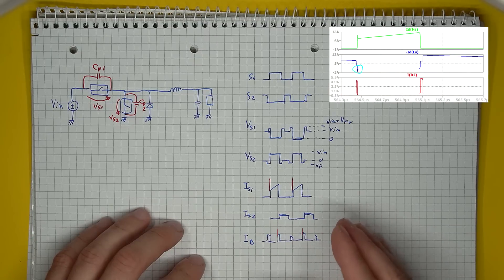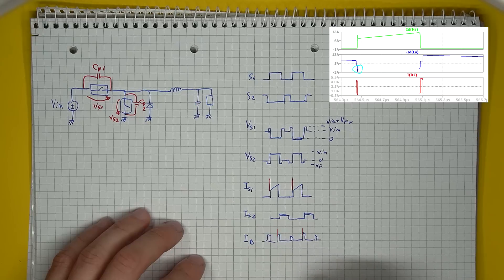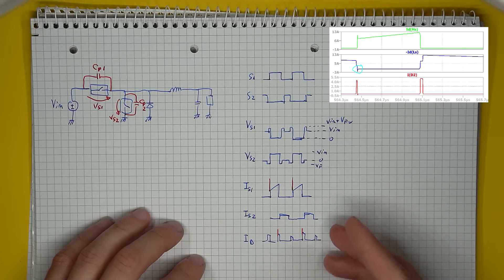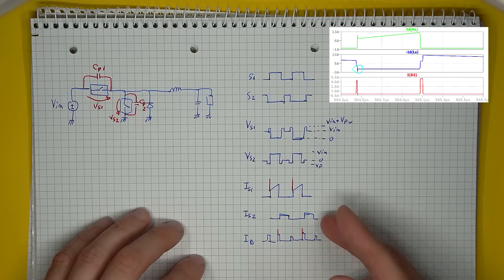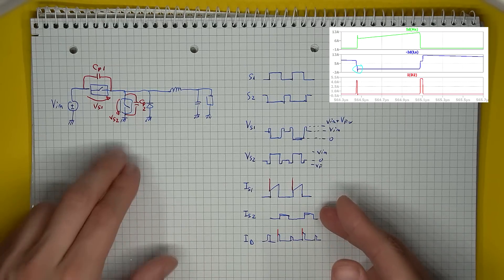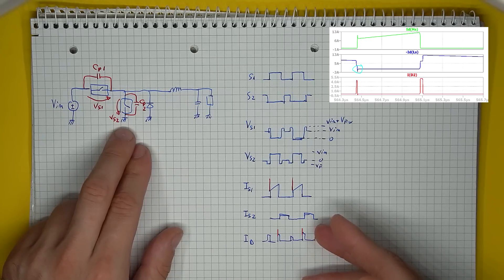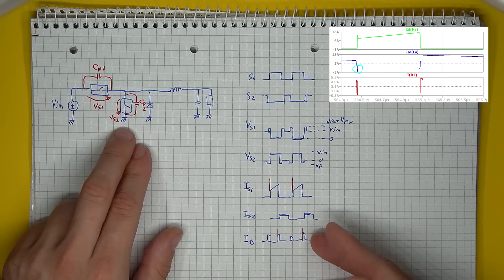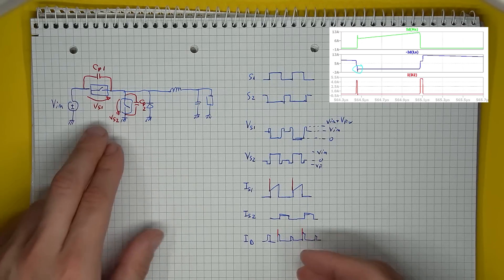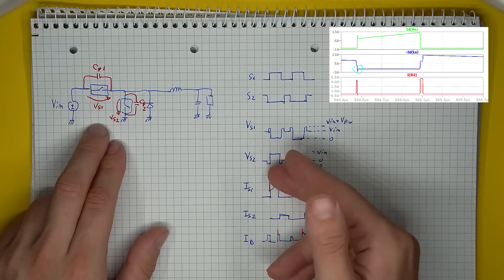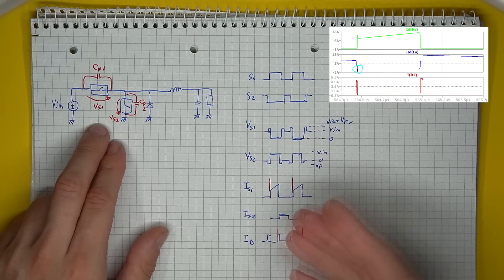Now the simulation did show some spikes also appearing on the low side switch, but this is mainly because the current we are monitoring is not just the switch current but rather the switch current plus the parallel capacitance current. So the spikes were not occurring during the monitored switch transition, but rather when the other switch was transitioning.